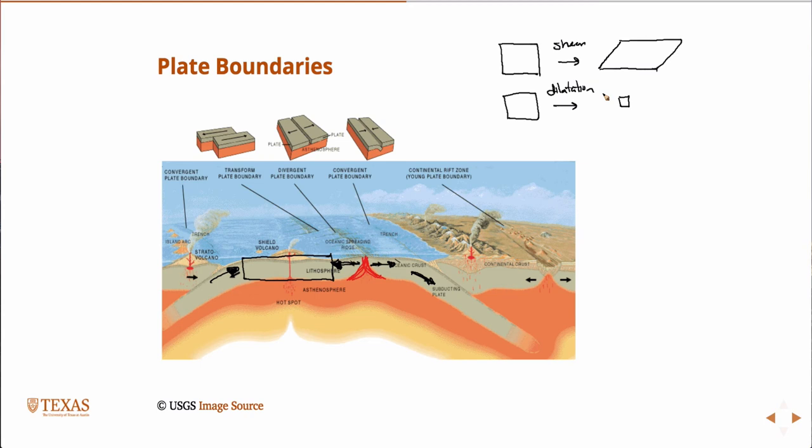And so as we're shearing the rock due to these irregularities, then we actually get failure due to shear, and then the plates begin to slide past one another. And this is what we call a transform plate boundary. These also mostly occur in the oceans. However, there is one significant transform plate boundary on our western border. What is it called? The San Andreas Fault.